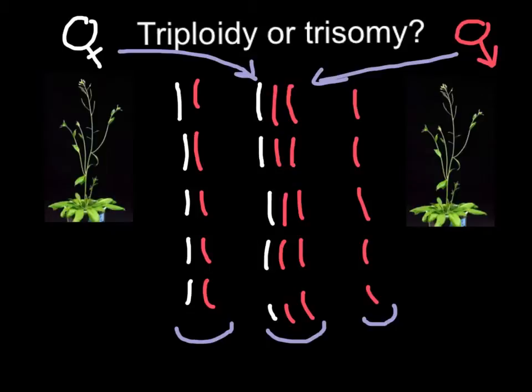From, say, the mother side or from the father side. So this is just one chromosome that is present in three copies. It's called trisomy.